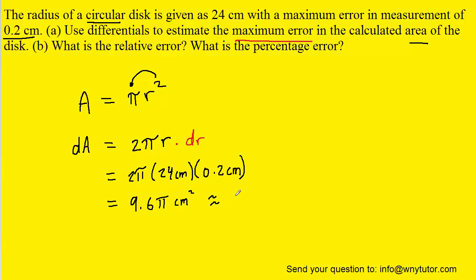And that turns out to be 9.6 pi centimeters squared. And if you wanted to estimate that, that turns out to be about 30 centimeters squared. So that would be the maximum error in measuring the area of this circular disk.